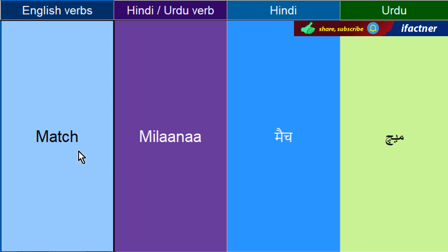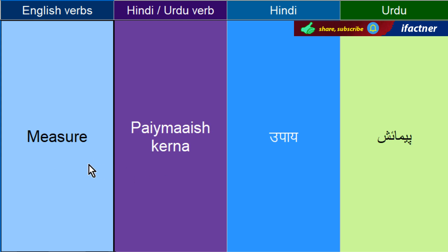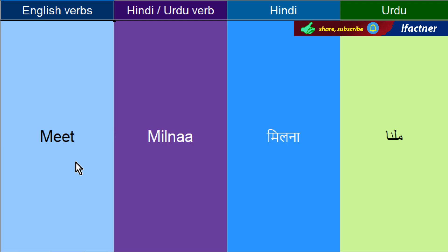Milana — Match. Matlab hoona — Mean. You are so mean. Permaish kerna — Measure. Aar is ko mayor bhi pedha jata hai, dono pronunciation theek hai. Milne ko kehengay — Meet. Piglna — Melt. Zum hoona, kisi cheez mein merge ho jaana, mil jaana — Merge. Jis na aap doh colors ko merge kerna, aapas mein mila day. Hijret kerne ko kehete hai — Migrate. Isi se migration nikla hai.